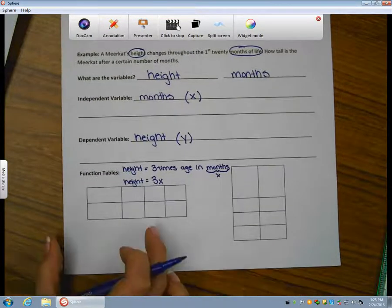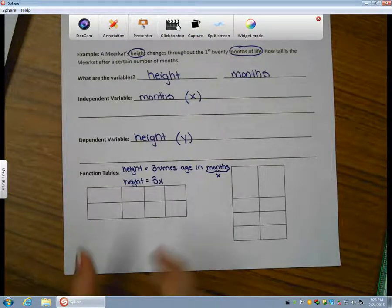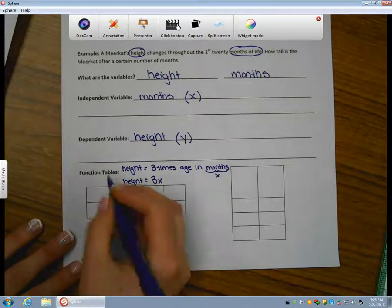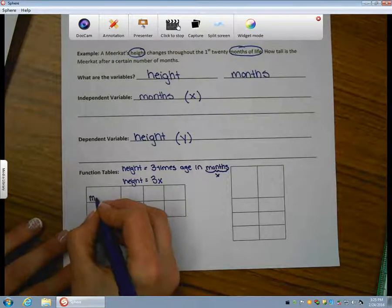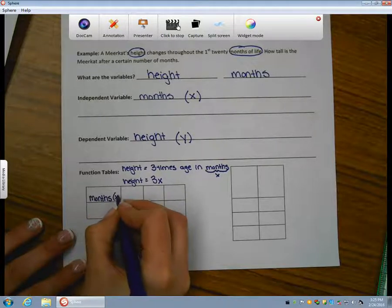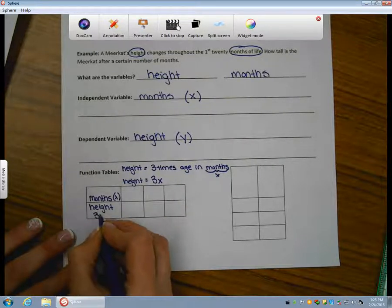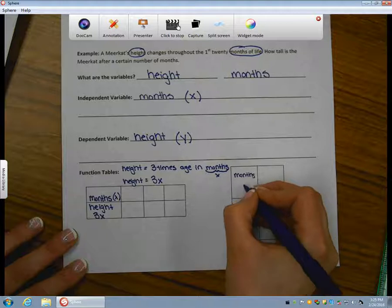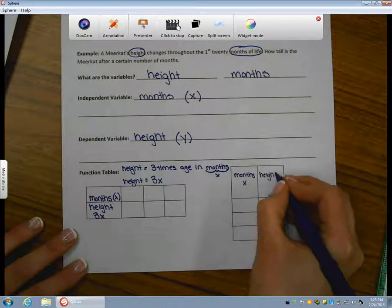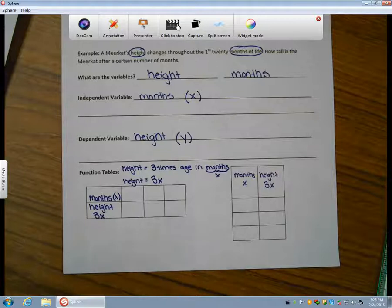You'll notice on your paper that I have function tables drawn in two different ways. We've called these function tables. We've called them input-output tables. They can be held horizontally or vertically. So I'm going to start by putting my two variables into the table. Both of these function tables will have the exact same data, they just look a little different, and we want to be familiar with both of them.